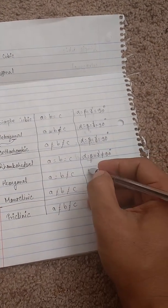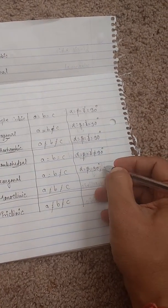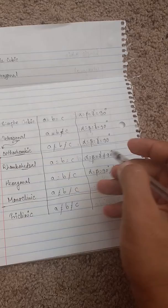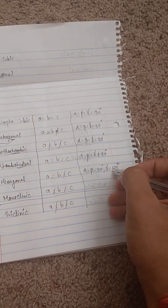In rhombohedral, alpha equals beta equals 90 degrees and gamma is not 90 degrees. In hexagonal, gamma is 120 degrees, not 90 degrees - so gamma equals 120 degrees.